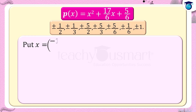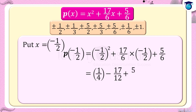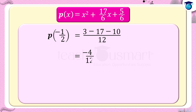Put x equals minus 1/2: p(minus 1/2) equals (minus 1/2) squared plus 17/6 times (minus 1/2) plus 5/6, equals 1/4 minus 17/12 plus 5/6, equals (3 minus 17 plus 10) divided by 12, equals minus 4/12, equals minus 1/3, which is not equal to 0. That is, p(minus 1/2) is not equal to 0.